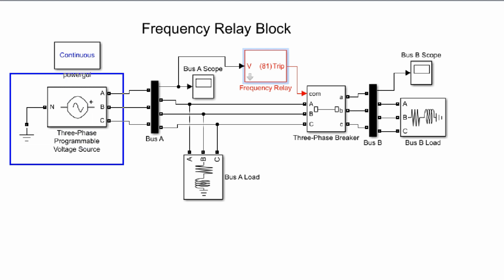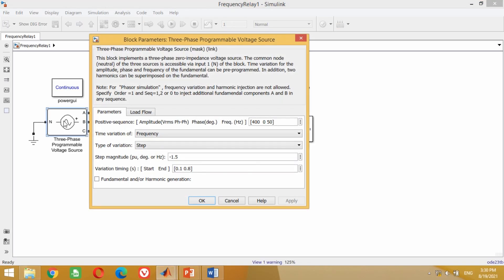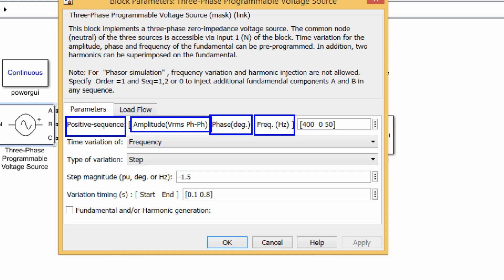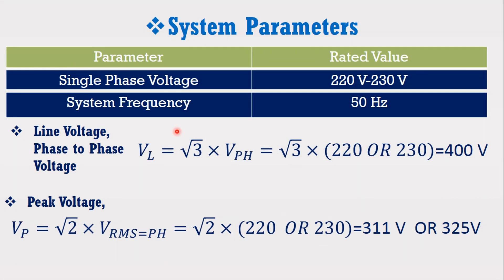This model contains a three-phase programmable voltage source. Double click on it to see its values. In the parameter section, the first data consists of positive sequence voltage amplitude, angle, and frequency. Here in this model, 400 volts is used. We know that single-phase voltage in Pakistan is 220 to 230 volts, so the line voltage or phase-to-phase voltage becomes 400 volts. That's why 400 volts is used here. Angle and frequency used here are 0 degrees and 50 Hz respectively.